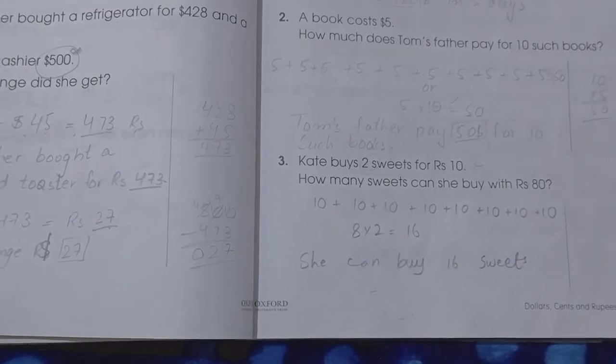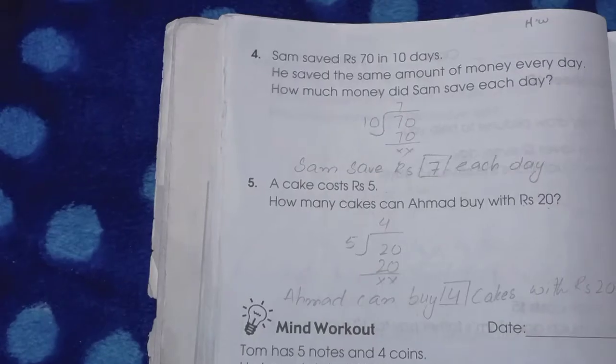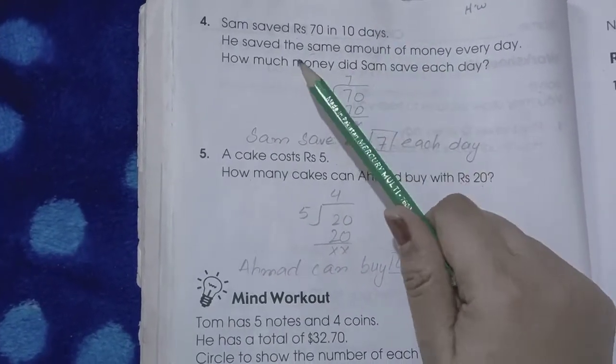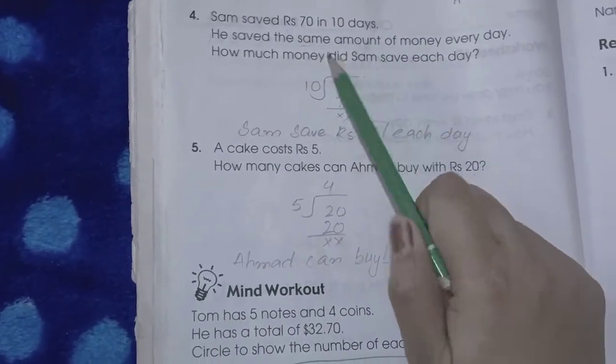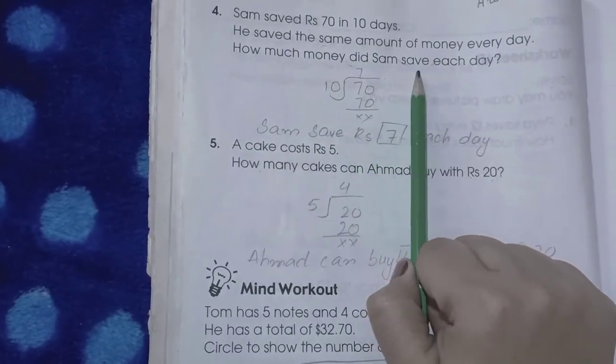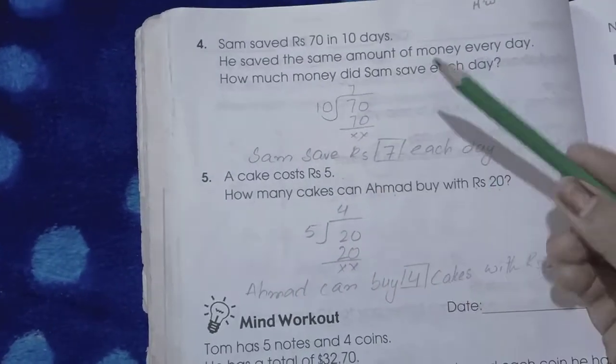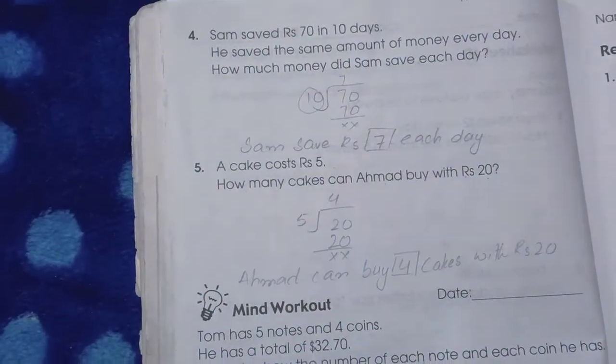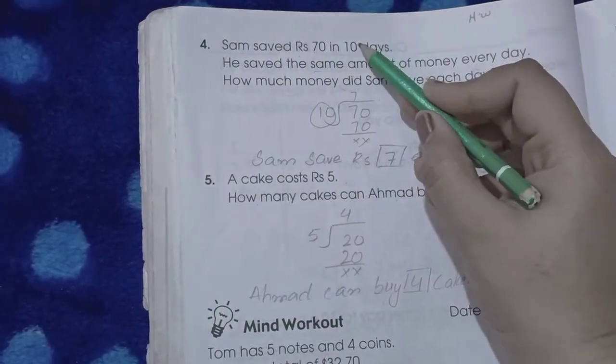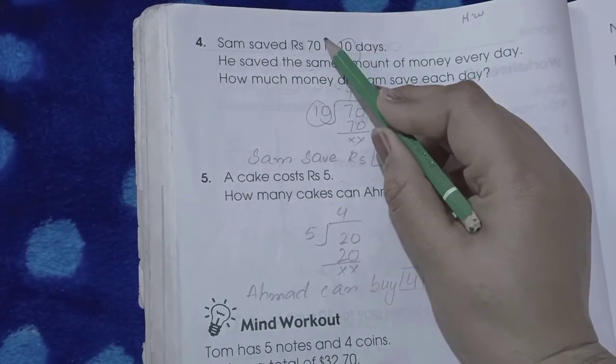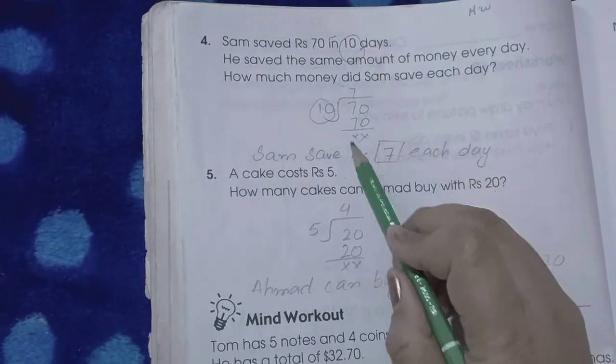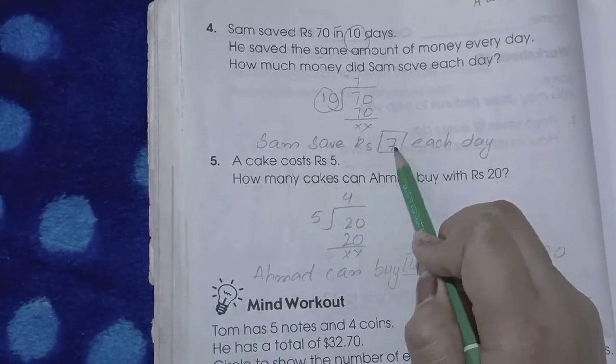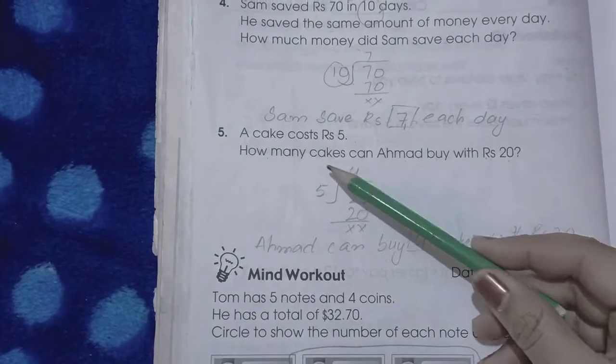Page number 40, number four: Sam saved 70 rupees in ten days. He saved the same amount of money every day. How much money did he save each day? Simply we divide 70 by 10. Ten sevens are seventy. It means he saved 7 rupees each day.